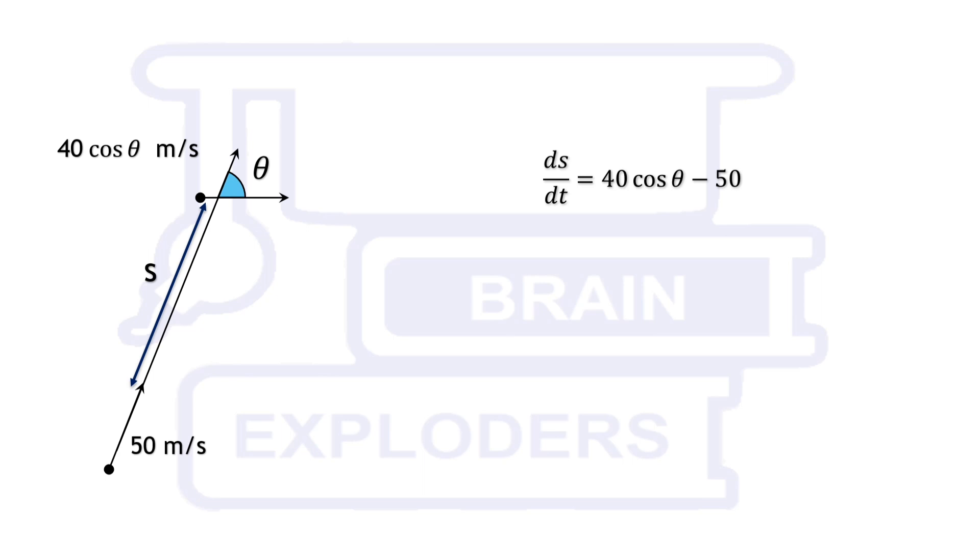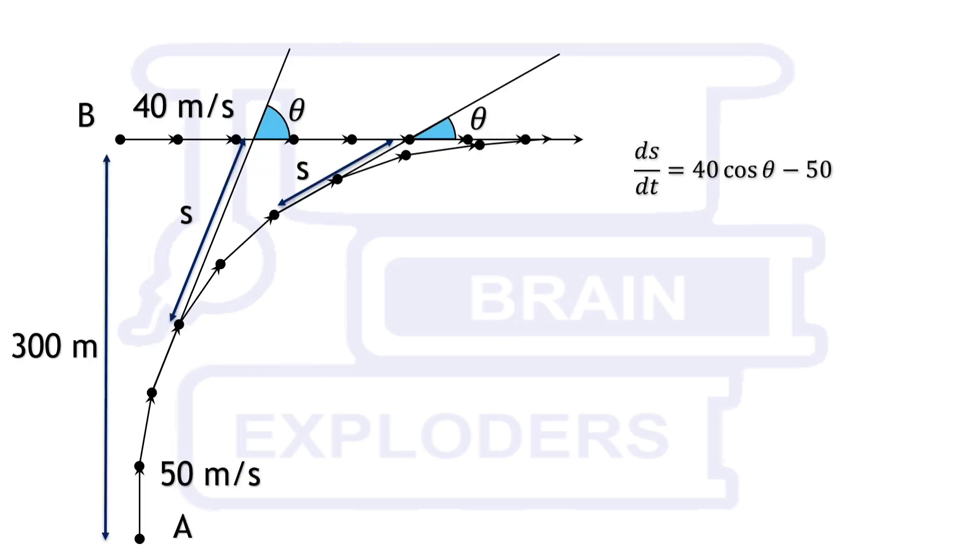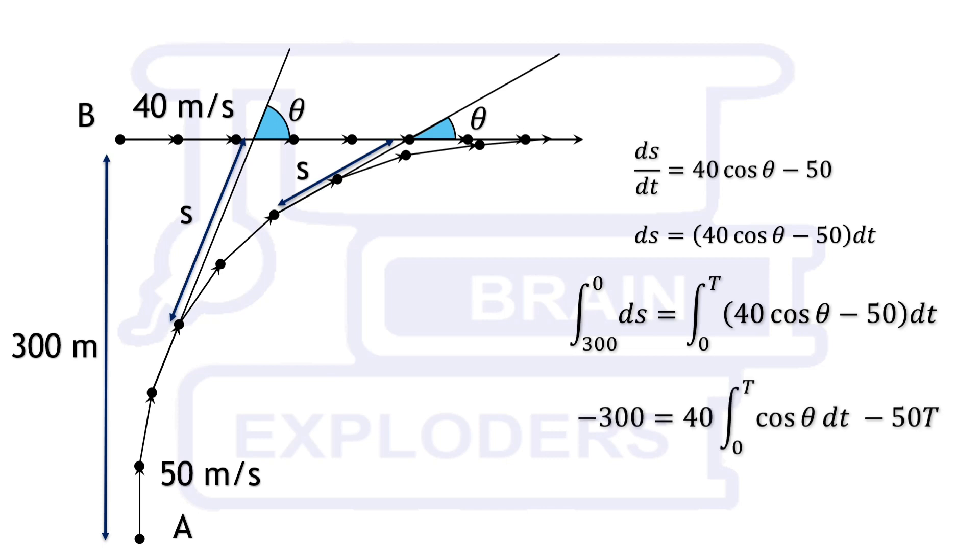Suppose after time t both the ships collide. In this duration, s changes from 300 to 0. So on integrating and taking the proper limits of integration, we get minus 300 equals to 40 times integration 0 to t cos theta dt minus 50t.